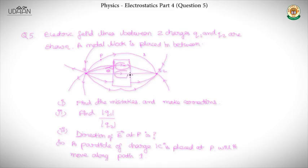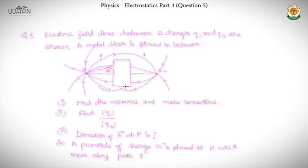If a tangential field existed, charges would move to nullify it, so it's not possible. The correction is to make the field line perpendicular. Also, there can't be an electric field existing inside a metal — those two portions must be erased, since the electric field inside the metal is zero. Another line has a point where you cannot draw a tangent, which violates the definition of field lines.